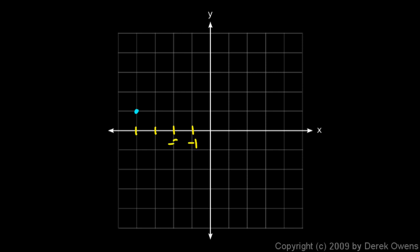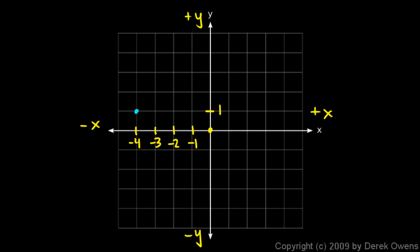Here's example 2. This point is four to the left of the origin and one up. Moving left along the x-axis — 1, 2, 3, 4 — that's how far left this point is. Since left is the negative x direction, the x coordinate is negative 4. The point is one up, and positive y is up, so the y coordinate is positive 1. We write the coordinates for this point as (-4, 1).